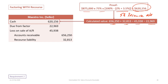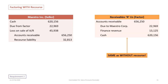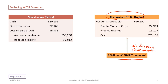We now jump over to the Receivables Are Us side — the factor — and that journal entry is exactly the same as without recourse. The factor does not account for the recourse liability in any way. If there is a problem with the receivables, it will pursue Maestro for all or a portion of the recourse liability, but that does not affect the journal entry. So the factor records: a debit to accounts receivable, credits to the holdback amount due, a credit to finance revenue, and the same amount of cash paid as previously.